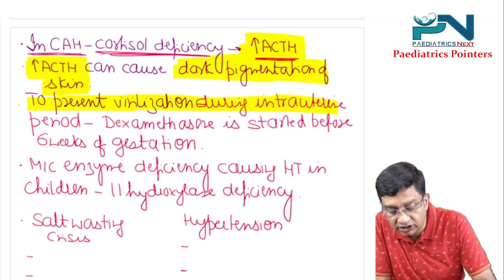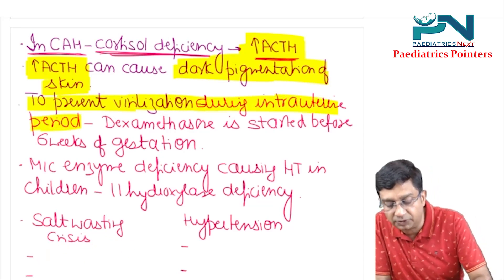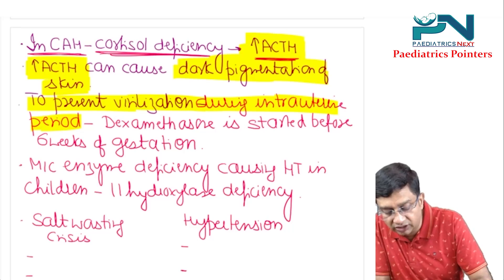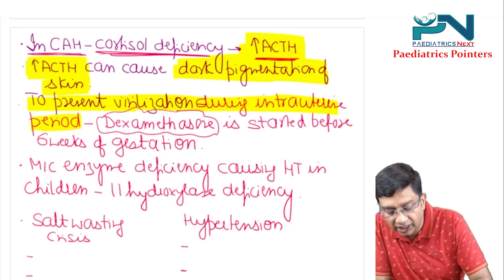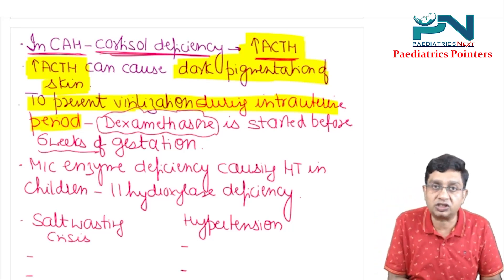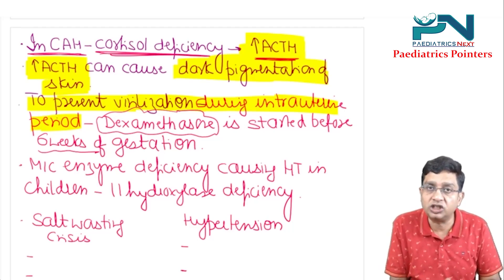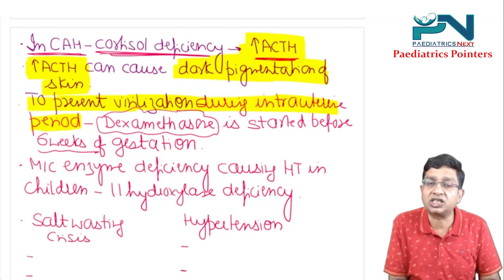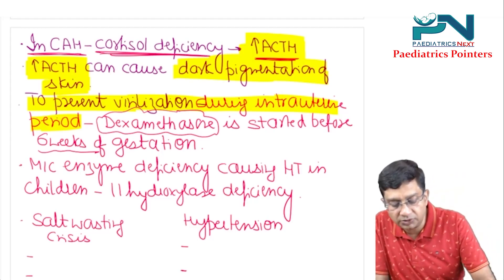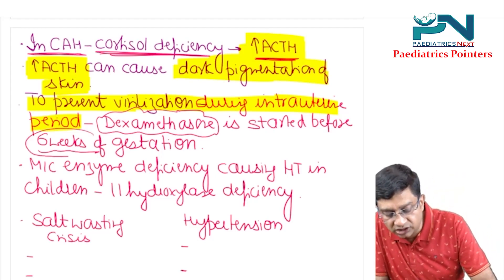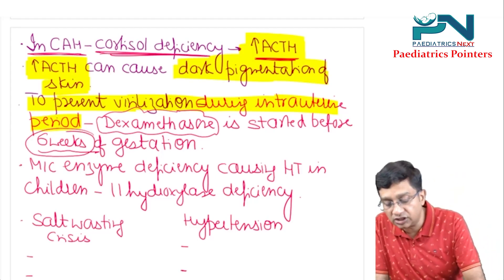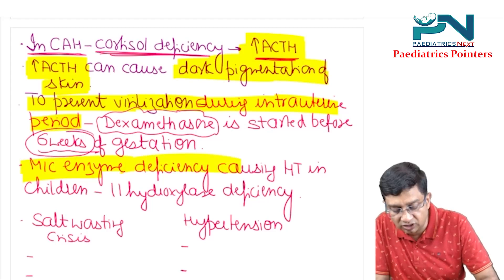To prevent virilization during the intrauterine period, the steroid given is dexamethasone, and it should be started before six weeks of gestation. This is because the cortisol-ACTH regulation is established by eight to ten weeks of gestation, so treatment must begin before six weeks. The most common enzyme deficiency causing hypertension in children is 11-hydroxylase deficiency.